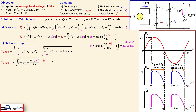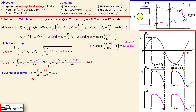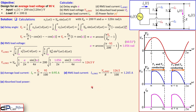Substituting alpha from equation (a) into the RMS voltage expression — with Vm equal to 200 and the factor of 1/2 — gives an RMS load voltage of 126.5 volts. The average load current is simply the average load voltage divided by the resistance: 95 divided by 100 equals 0.95 amps. The RMS load current is similarly 126.5 divided by 100, giving 1.265 amps.